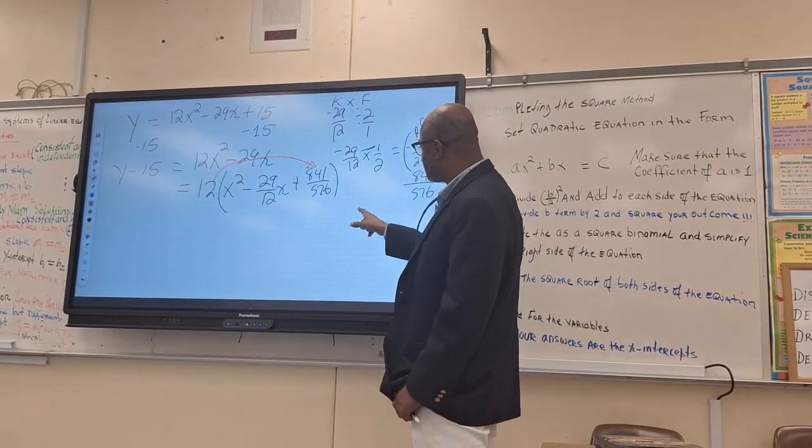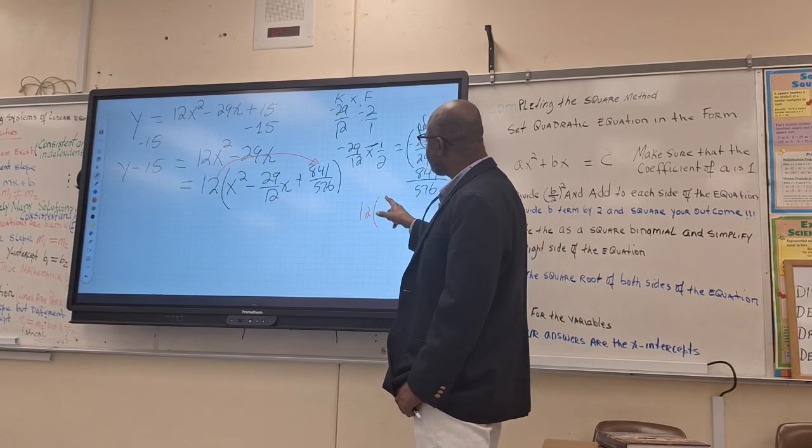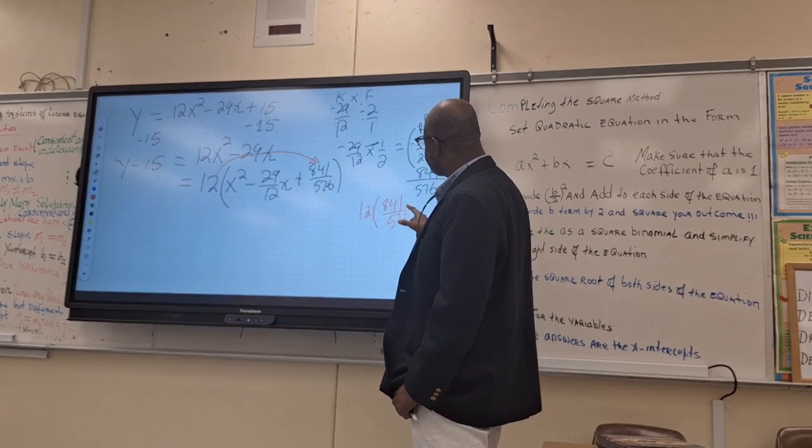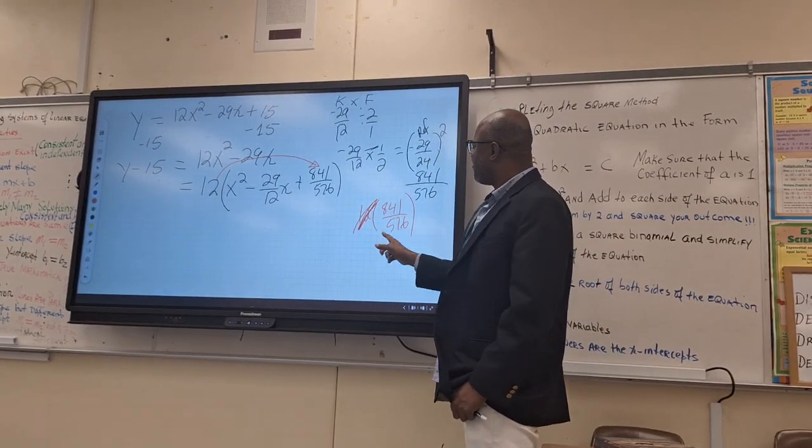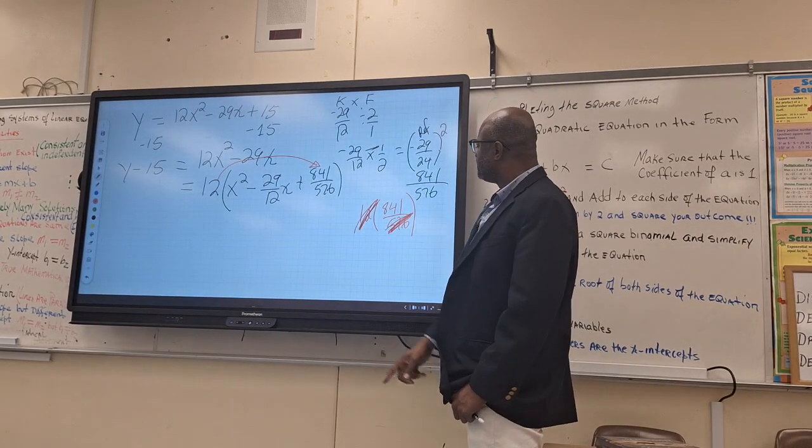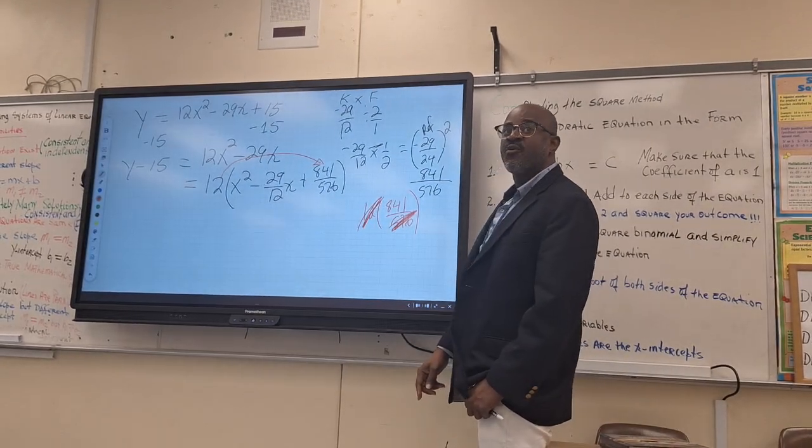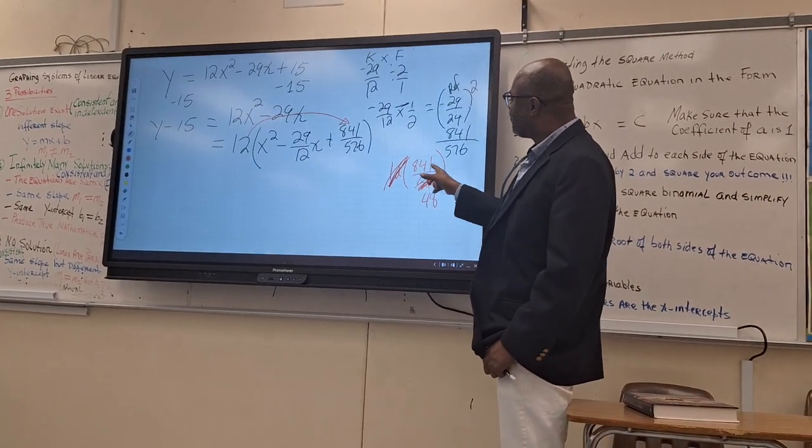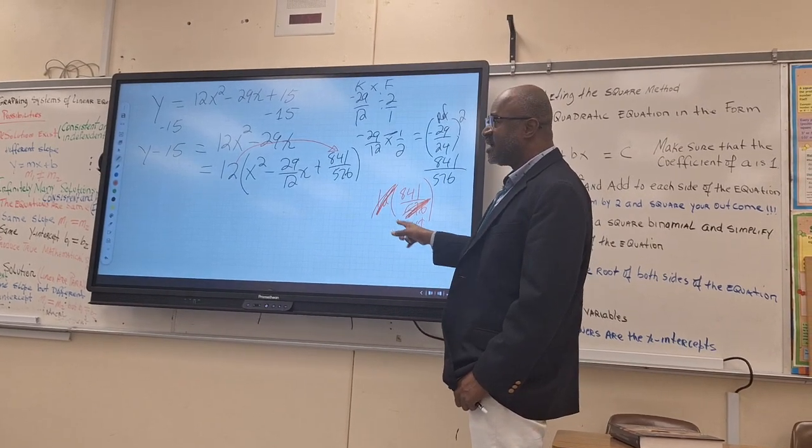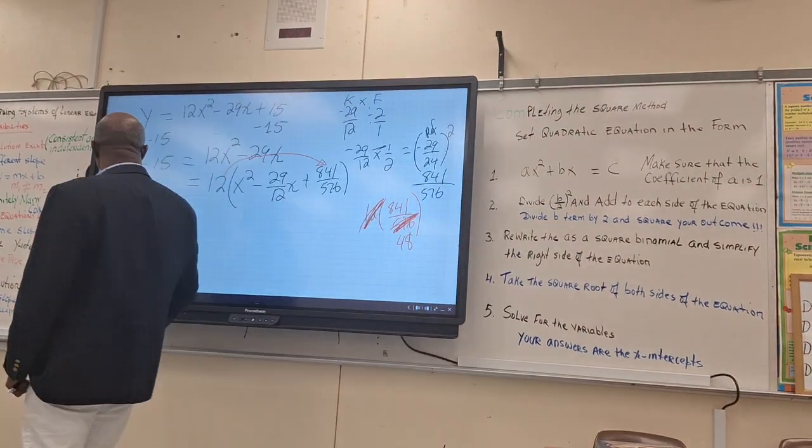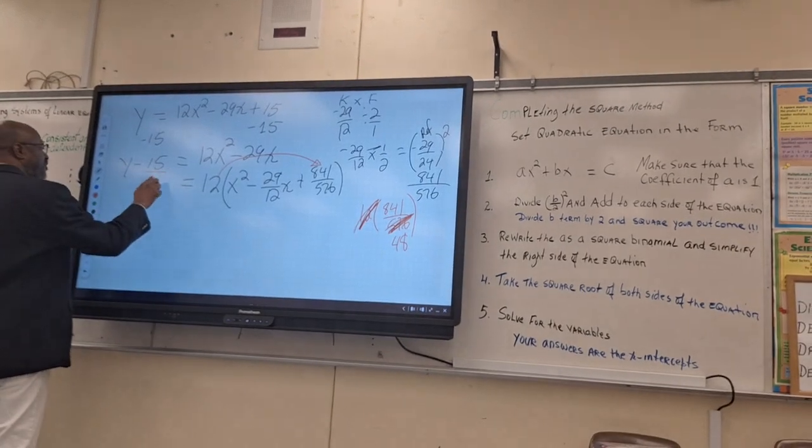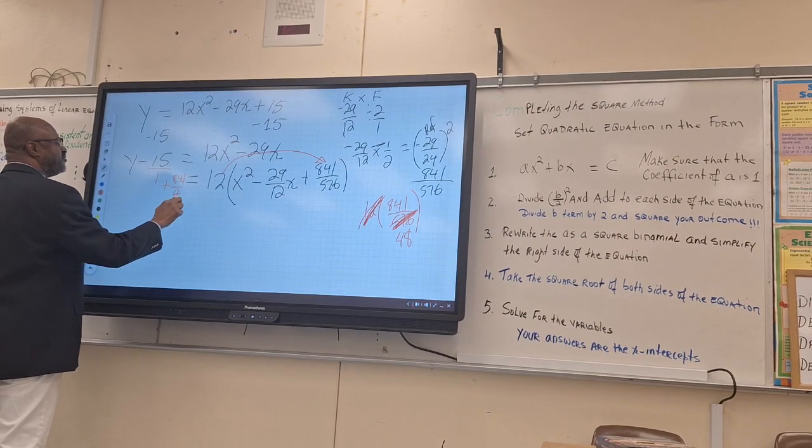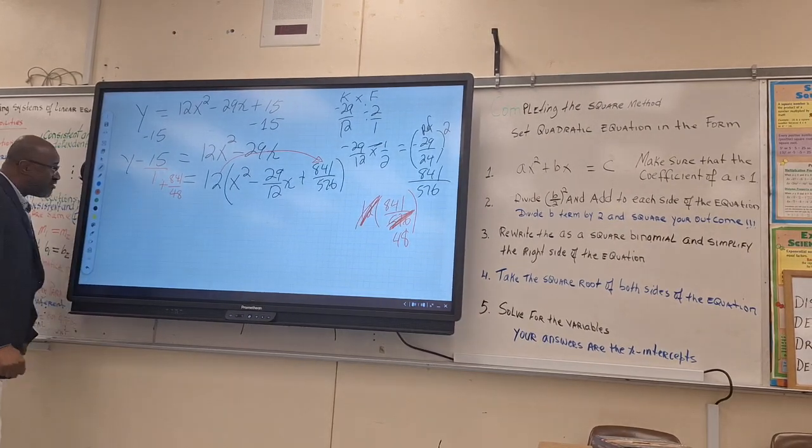So let's find out what we add on that side. That will be 12 times 841 over 576. 12 should go into 576 how many times? 48. So that's what we add. We add 841 over 48. Then that's what we need to add on the other side. So just put this over 1.